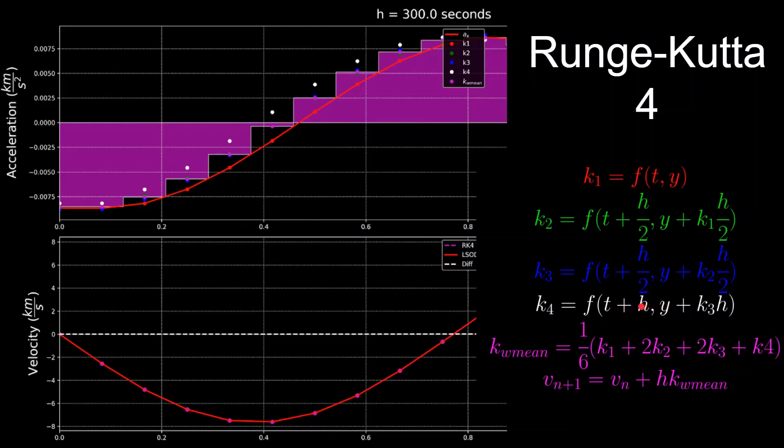And these K values are then summed up with K2 and K3, having twice the weight of K1 and K4, and then divided by 6, hence becoming a weighted mean of these derivative function evaluations. And then we use that mean estimate of the derivative between now and the next time step to update our estimate of the function at the next time step.